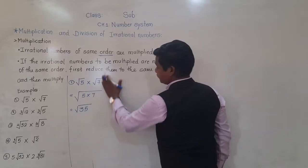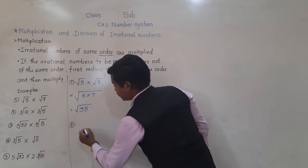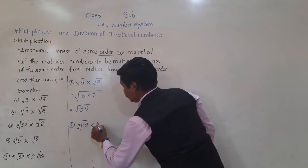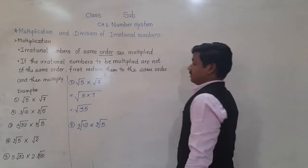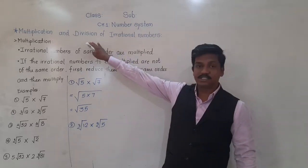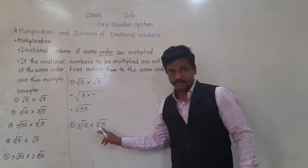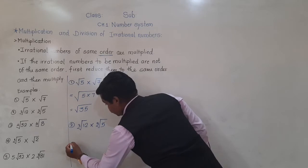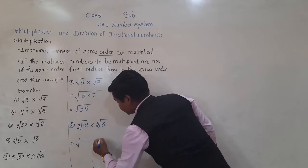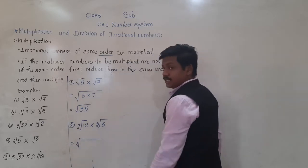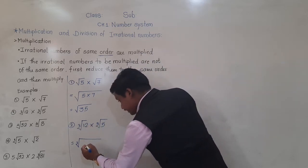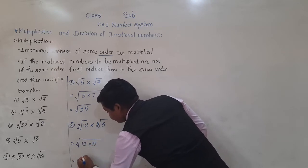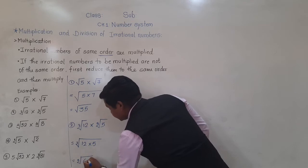See the second example: cube root of 12 into cube root of 5. This also belongs to the first rule. Their orders are same — 3 and 3. That's why we can multiply the numbers inside the radical sign directly: 12 into 5. That is cube root of 60.